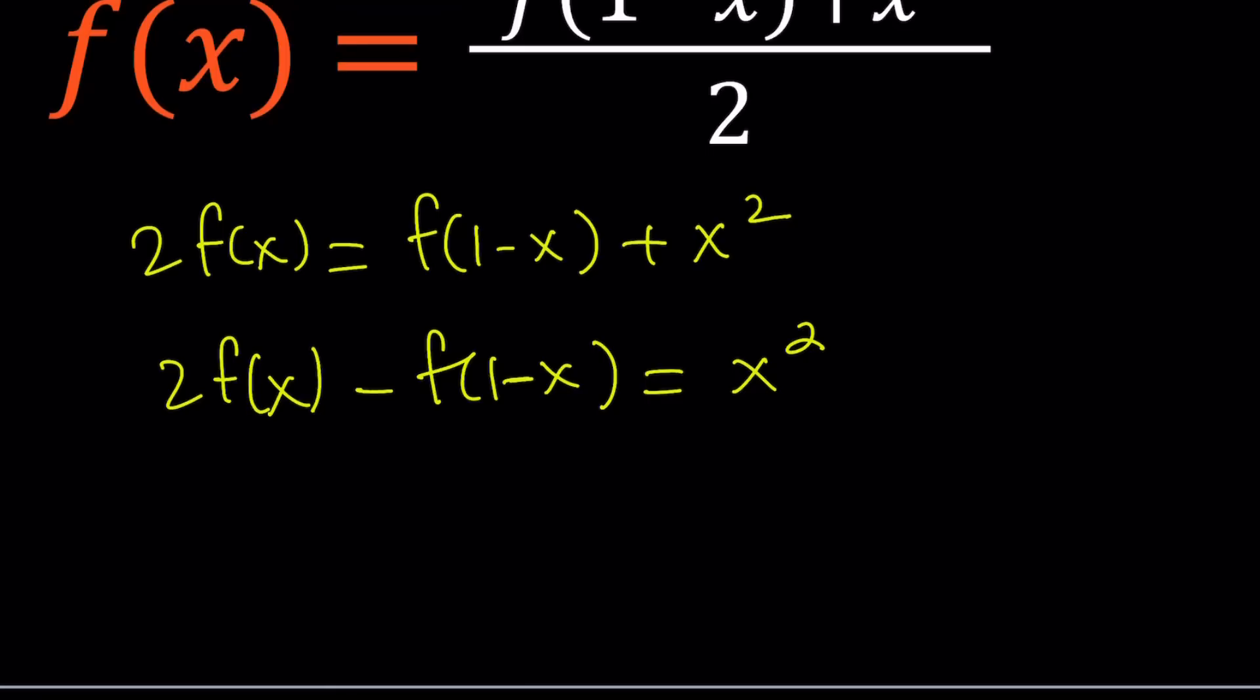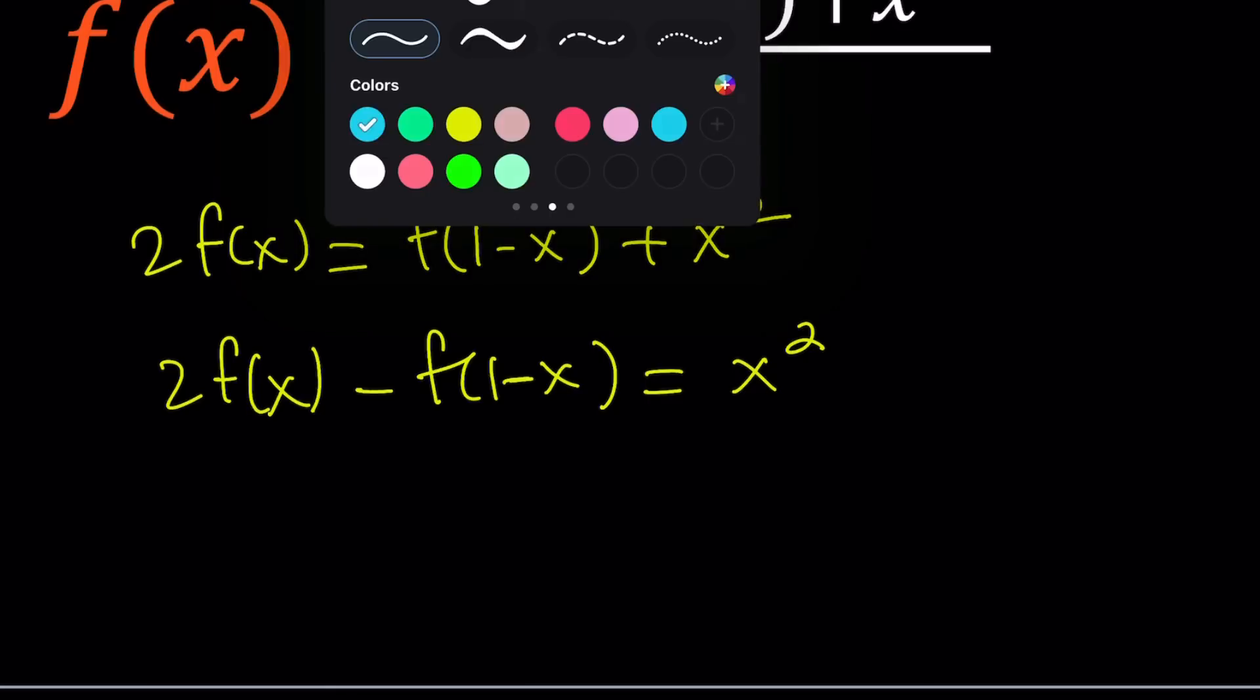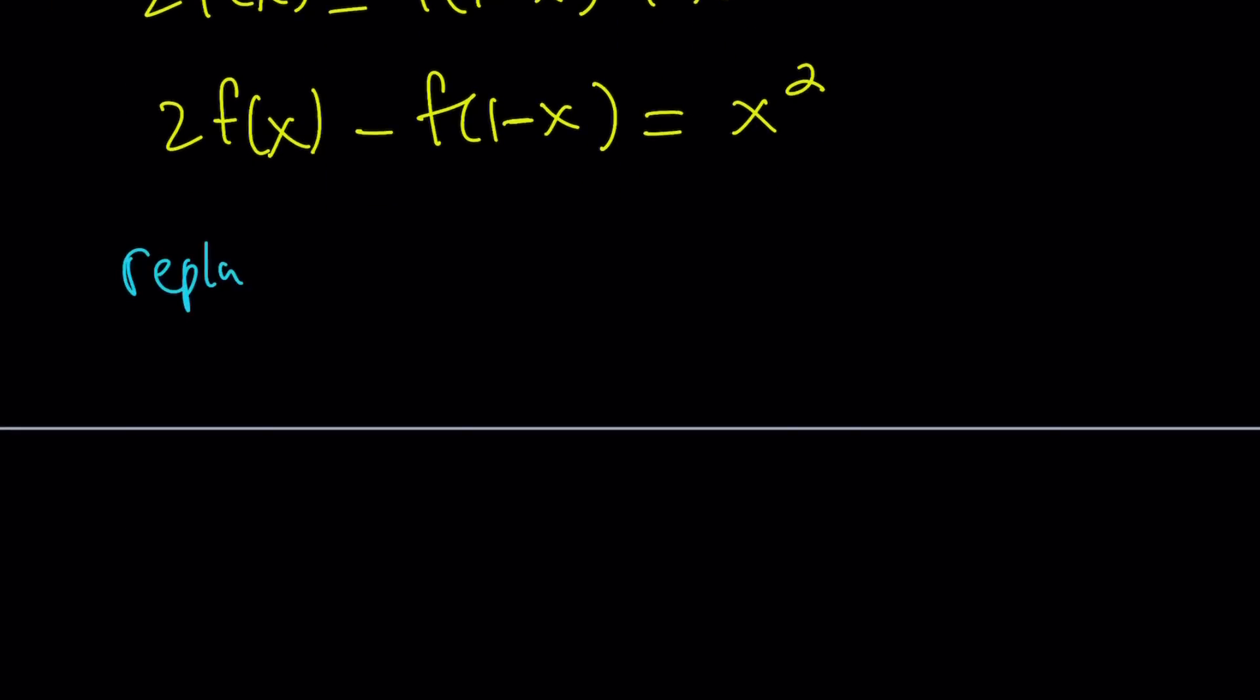The idea to solve this problem is replacing x with 1-x. Why? One reason is we have f(1-x) in the expression, so if you replace x with 1-x, f(1-x) is going to come up again. But we also have to check what happens with f(1-x) when we replace x with 1-x.